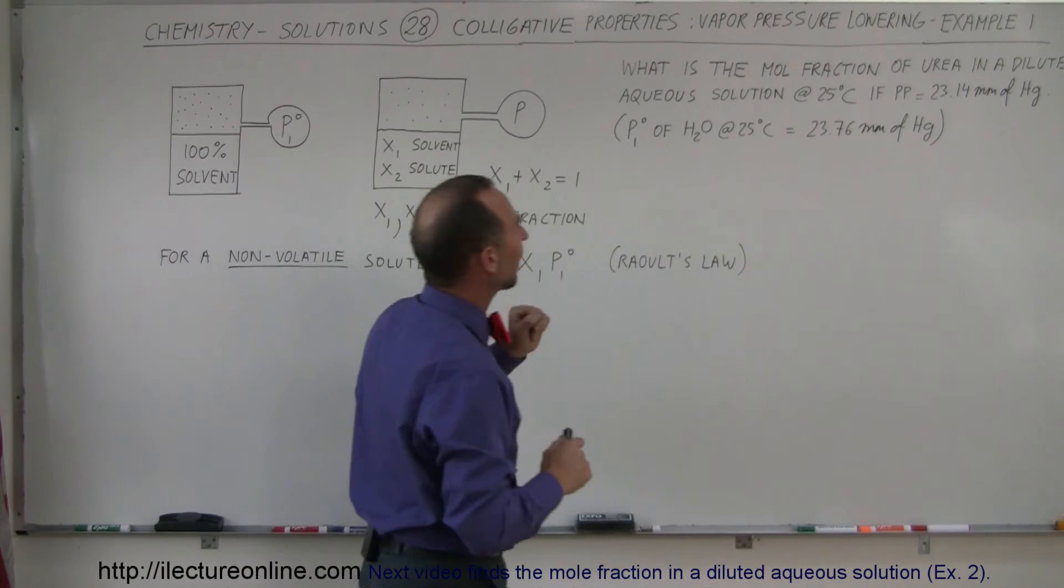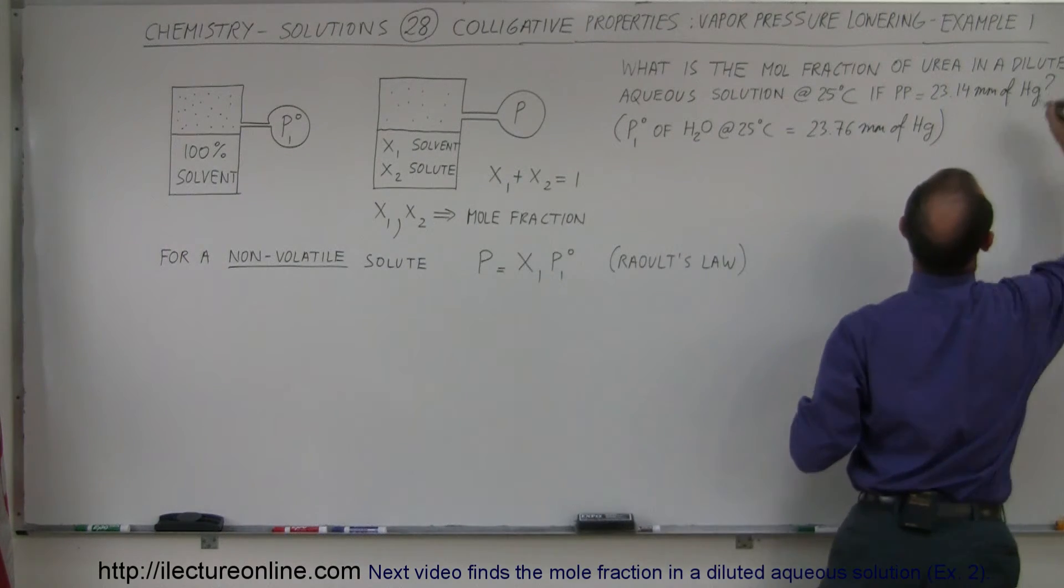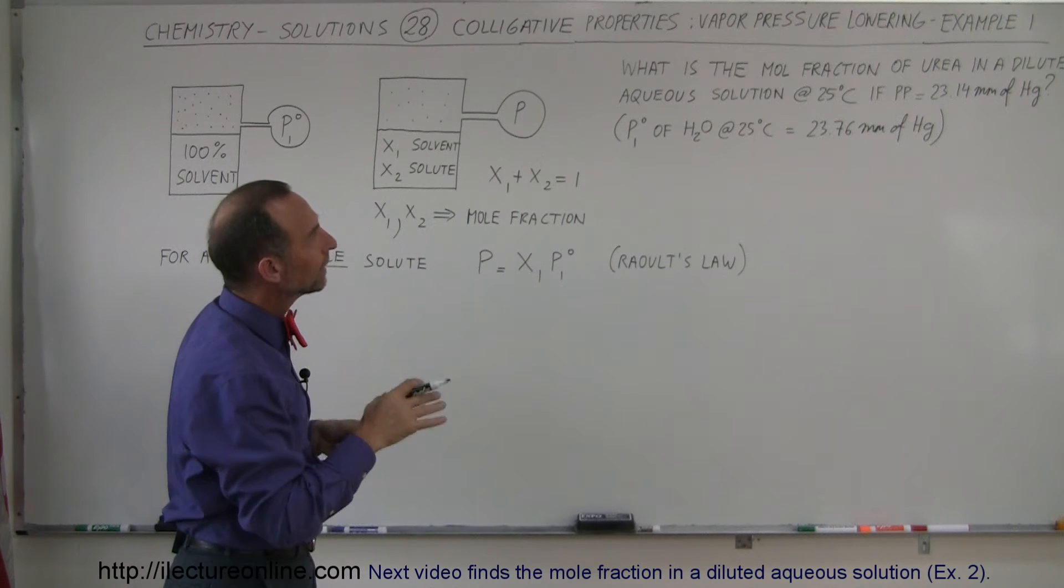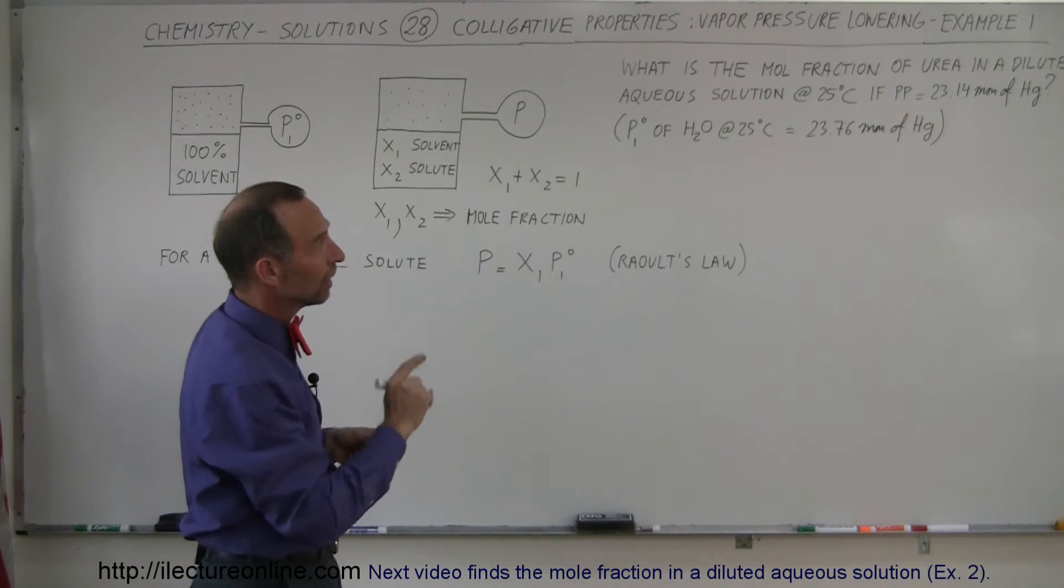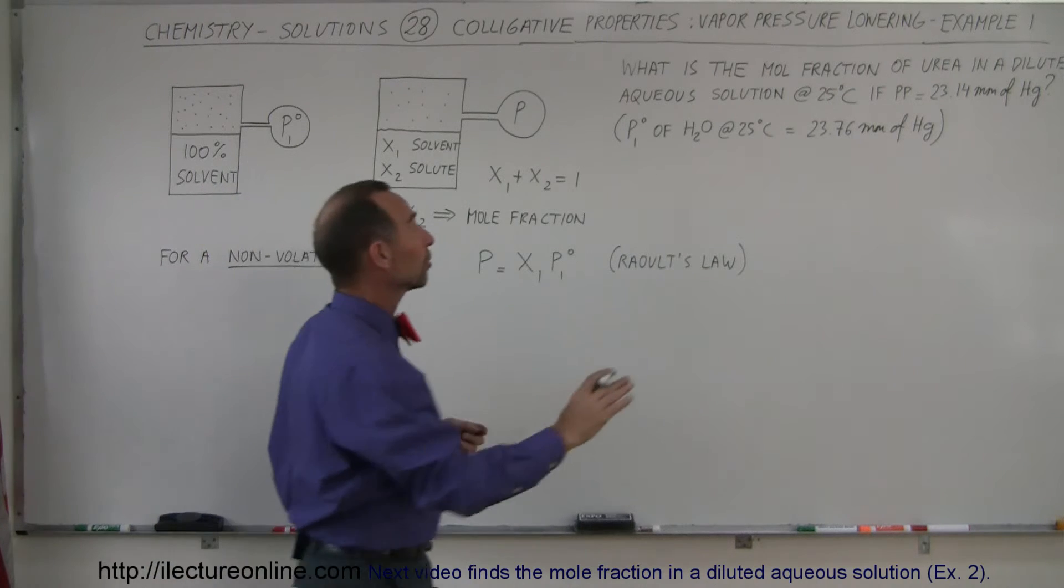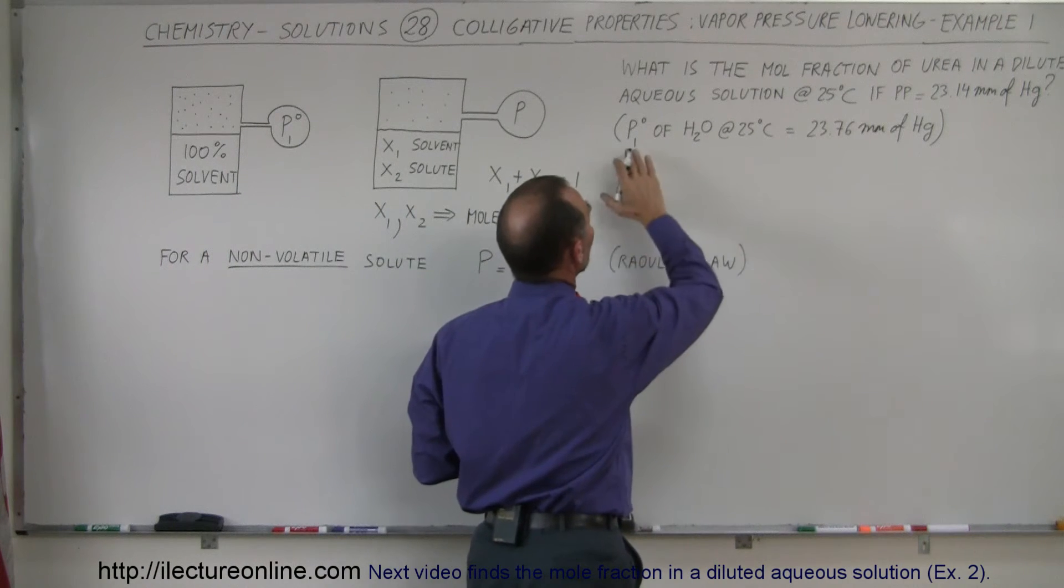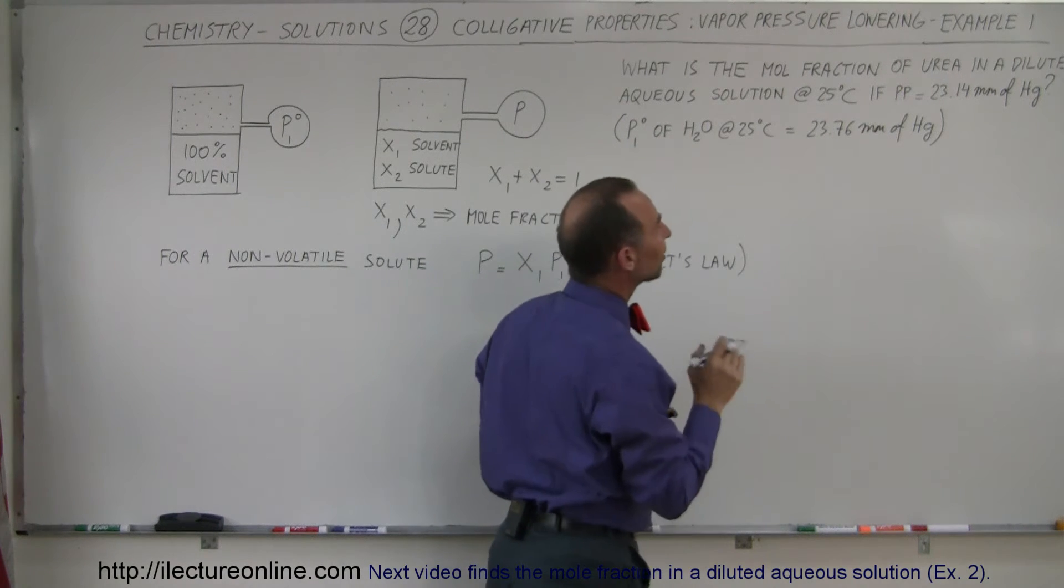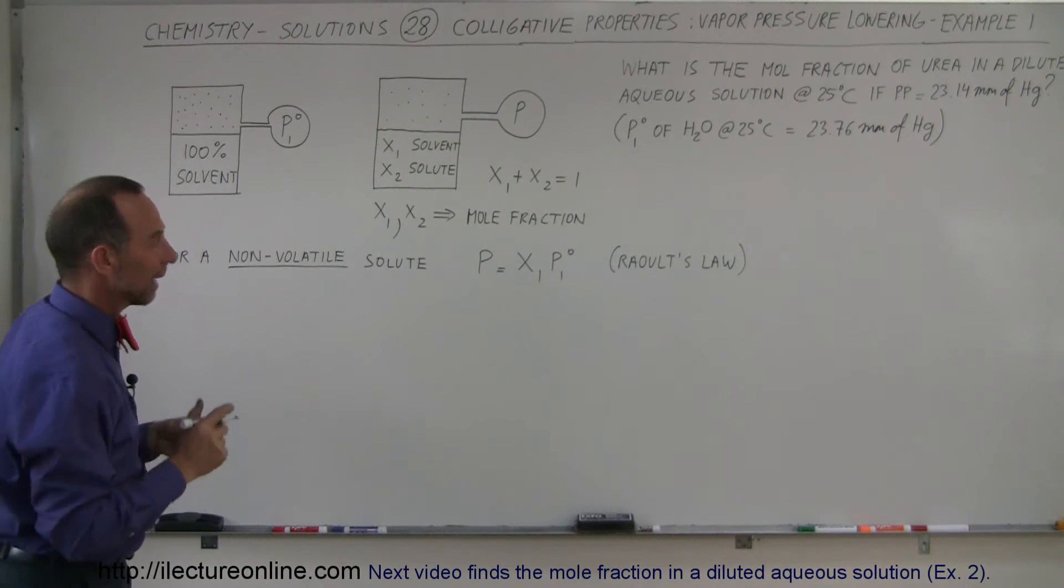In the problem here, they're asking what is the mole fraction of urea in a dilute aqueous solution at 25 degrees centigrade if the partial pressure of that solution is 23.14 millimeters of mercury? Because under normal circumstances, with water at 25 degrees centigrade, water being the solvent, the vapor pressure of water would be 23.76 millimeters of mercury if there was no urea solute in that solvent.